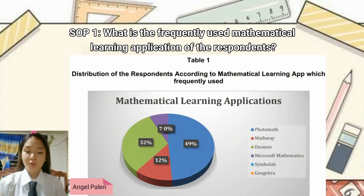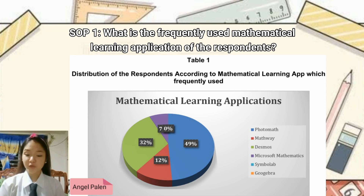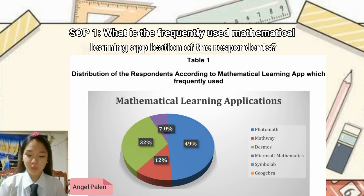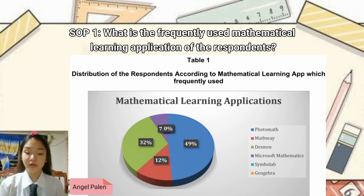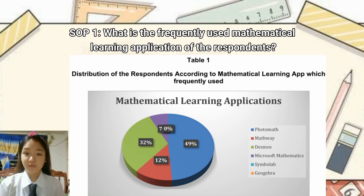Number 1: What is the frequently used mathematical learning application? The respondents show that Photomath got the highest percentage of 49%, followed by Desmos who got 32%. Mathway got 4th place with 12%. Microsoft Mathematics got 3rd place with 7%. Both Symbolab and GeoGebra had no respondents.